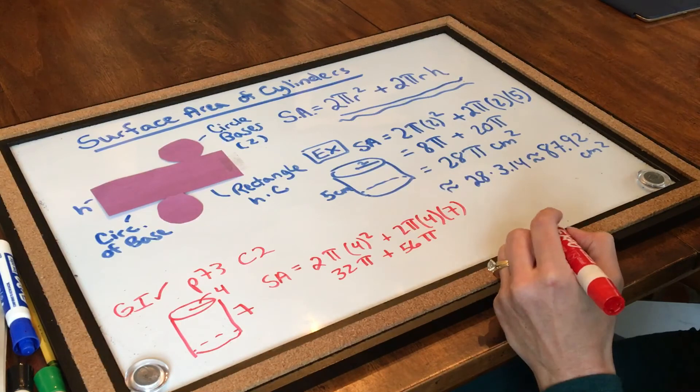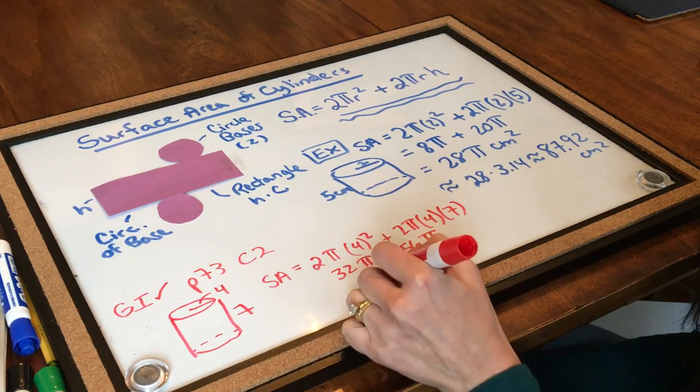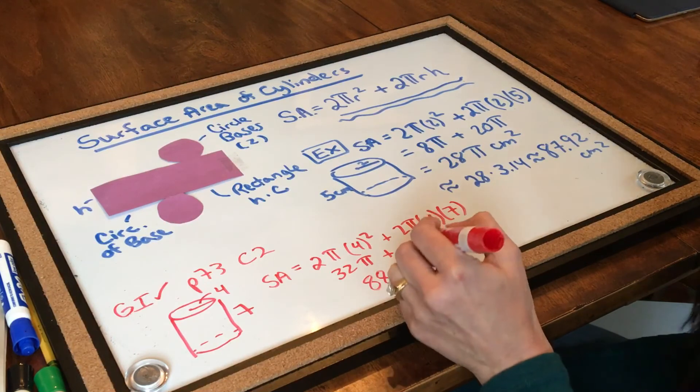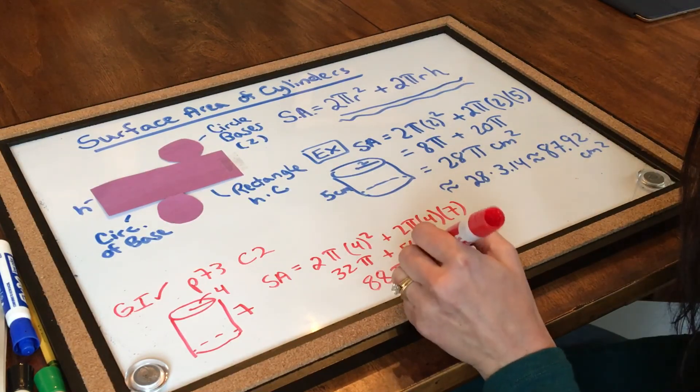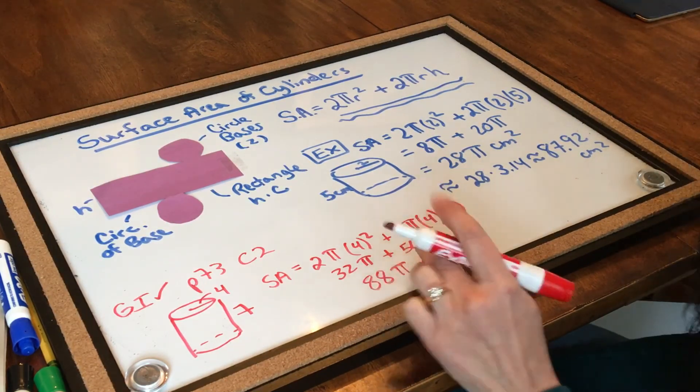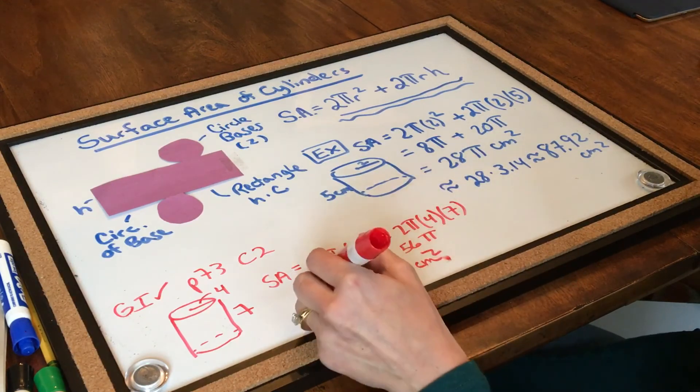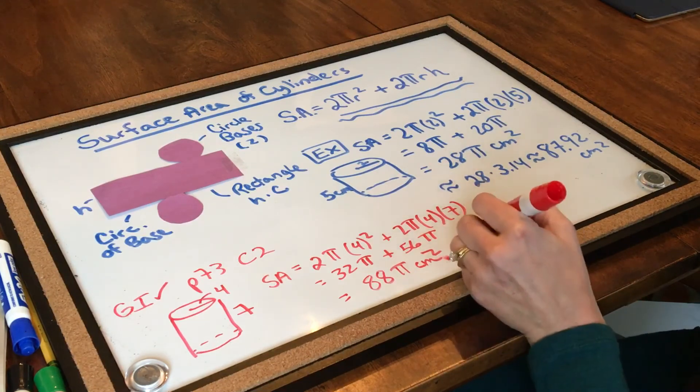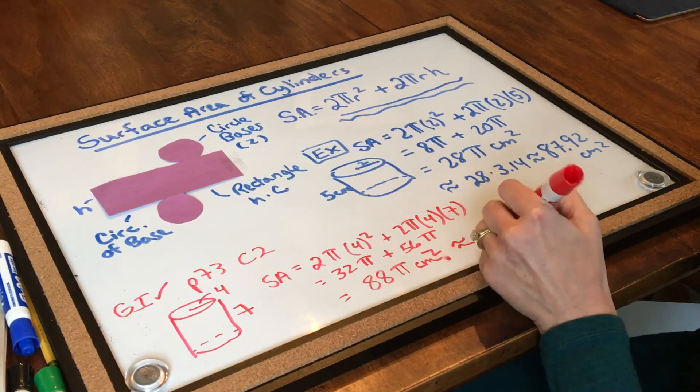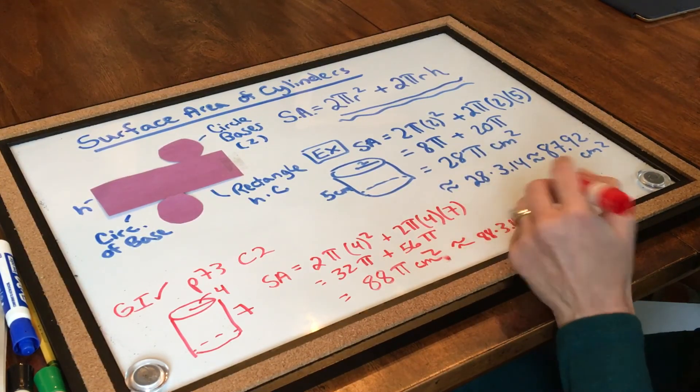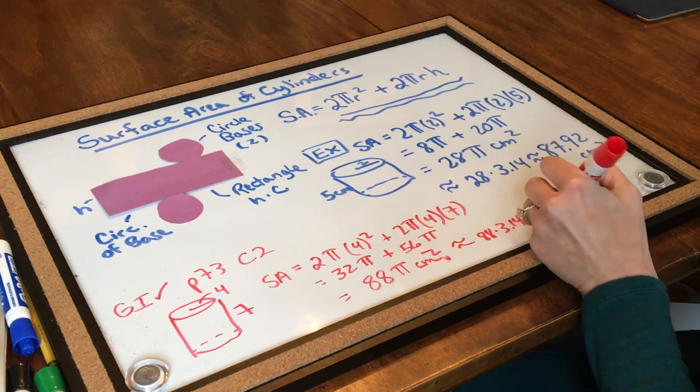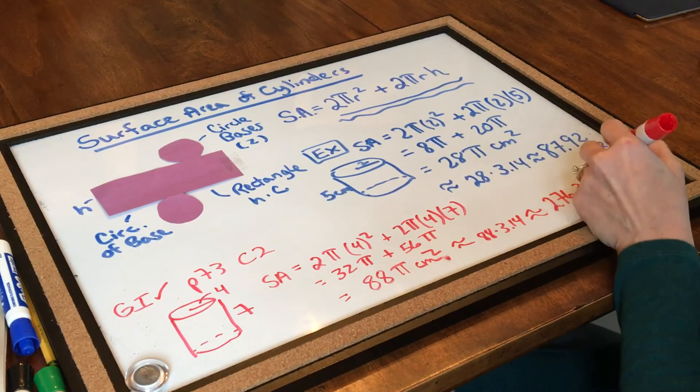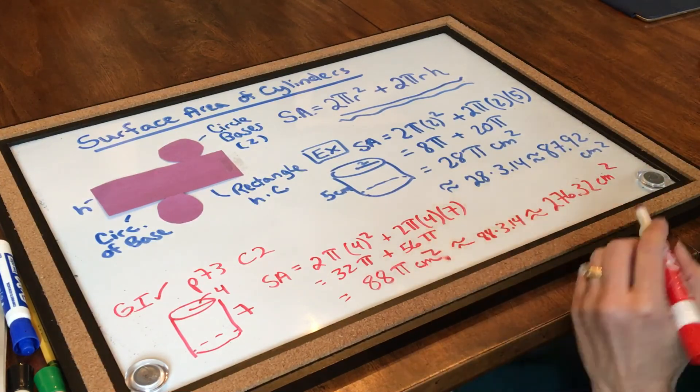32 pi plus 56 pi, that is 88 pi centimeters squared. And again, if we want an approximate answer, 88 times 3.14 will give me an approximate answer of around 276.32 centimeters squared. And that's my final answer.